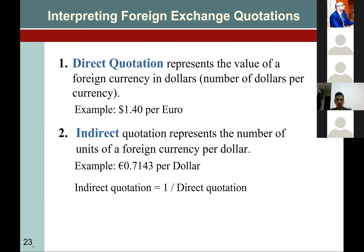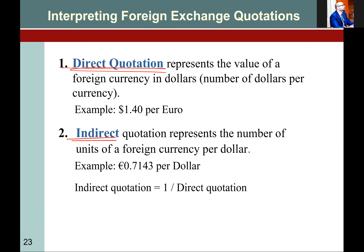Now, direct quotation and indirect quotation — pay very close attention. Direct quotation means it represents the value of foreign currency in dollars. For example: 1.40 dollar per euro. Pay very close attention — this 1.40 is the price of the euro, not the dollar. 1.40 dollar per euro.